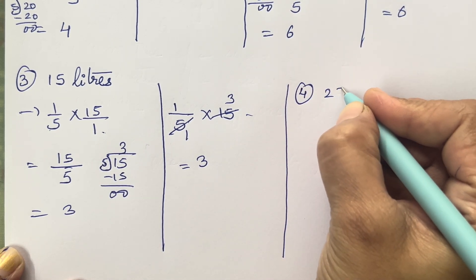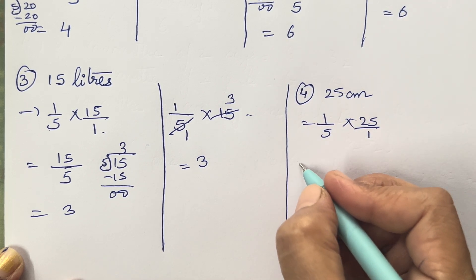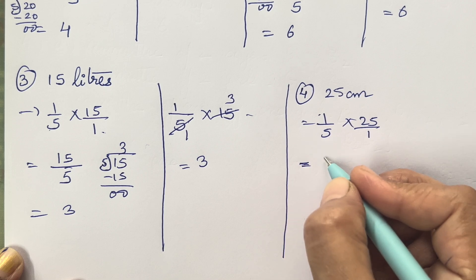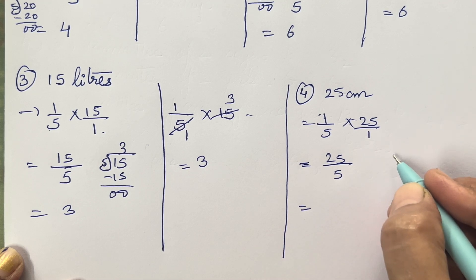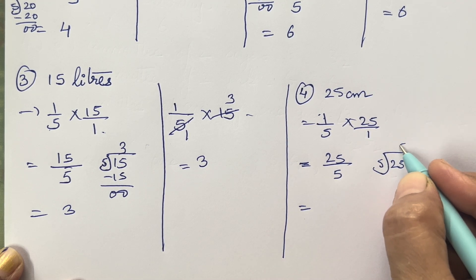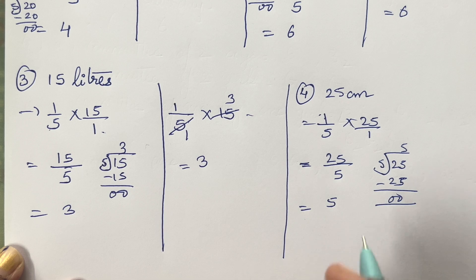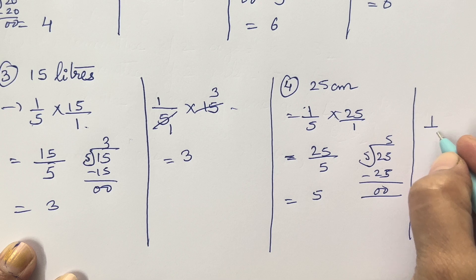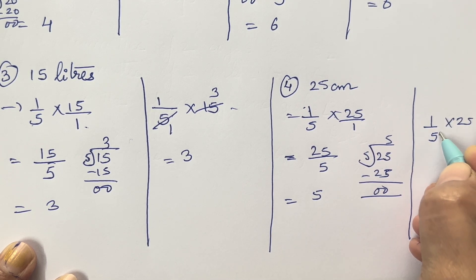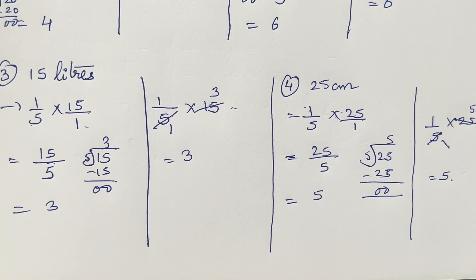Fourth: 25 centimeters. So 1/5 into 25 — 1 into 25 is 25, 5 into 1 is 5. Divide: 5 fives are 25, so your answer is 5. Using the direct method: 5 ones are 5, 5 fives are 25 — answer is 5. I hope this question is clear to everyone. Let's move on to the next question.